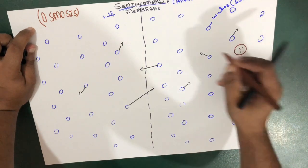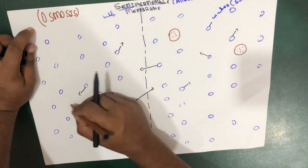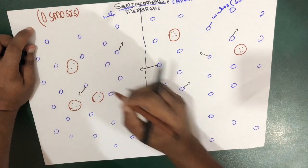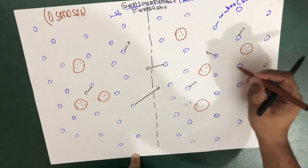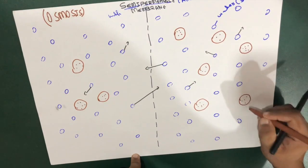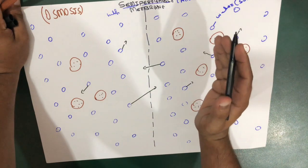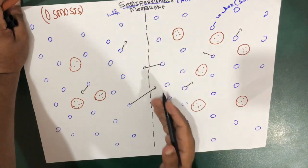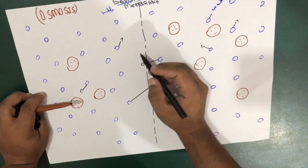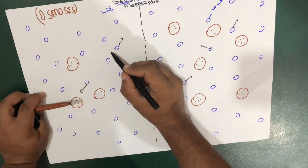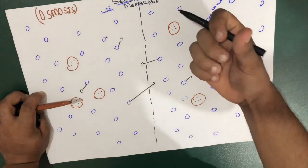Now let us introduce solutes. Consider this large particle as a glucose molecule. If we have more concentration of solute on one side of the semi-permeable membrane and less concentration on the other side, what happens? The water has a probability to move from the less concentrated side toward the more concentrated side, because solutes have the ability to attract water molecules.